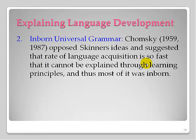A second theory is a biological-based theory for language acquisition. Some researchers argue that humans are pre-wired or biologically programmed to learn language. Chomsky, in 1959, opposed Skinner's ideas, basically arguing that children acquire language much too rapidly to explain it simply through learning principles. Chomsky believed we have a built-in universal grammar device that allowed us to identify basic dimensions of language.